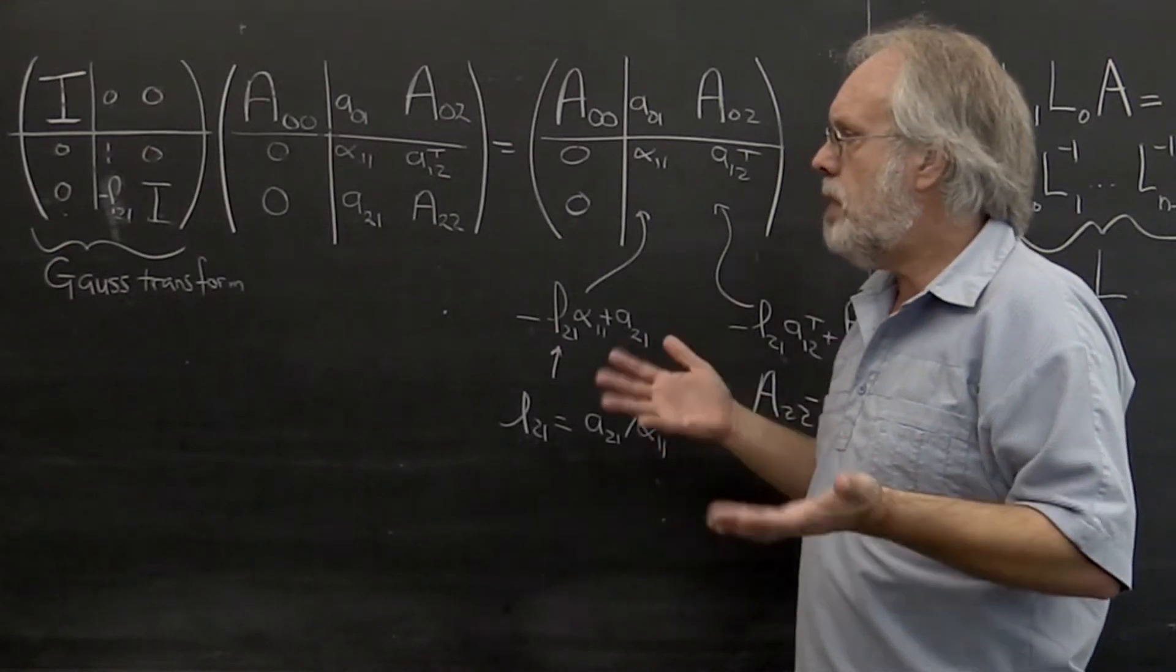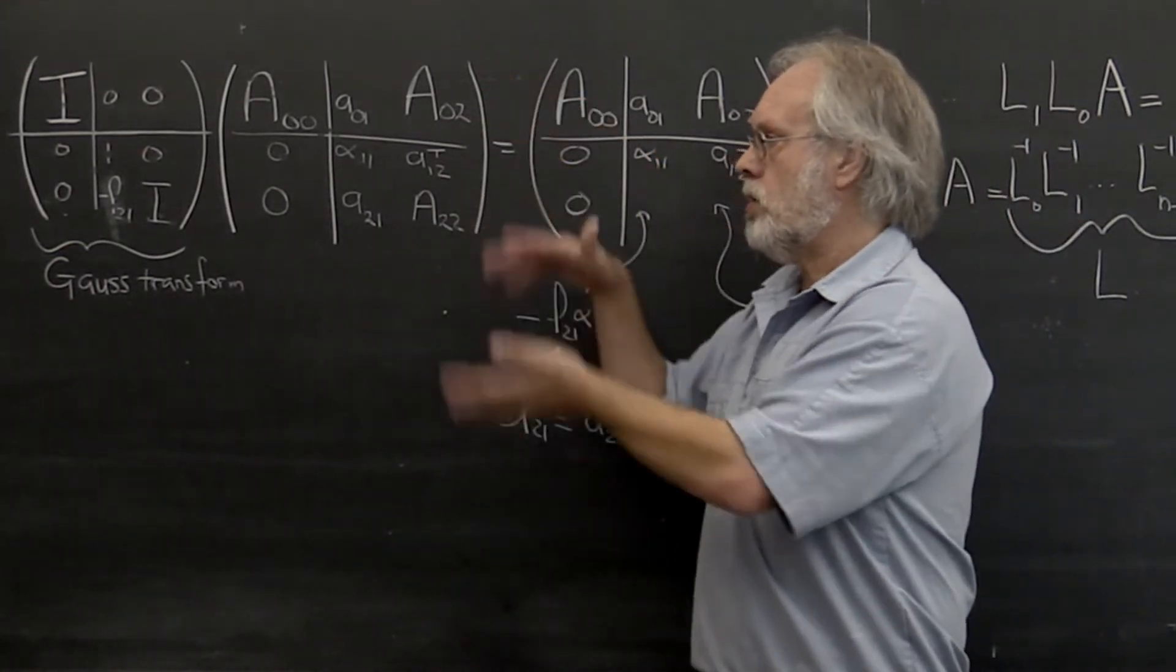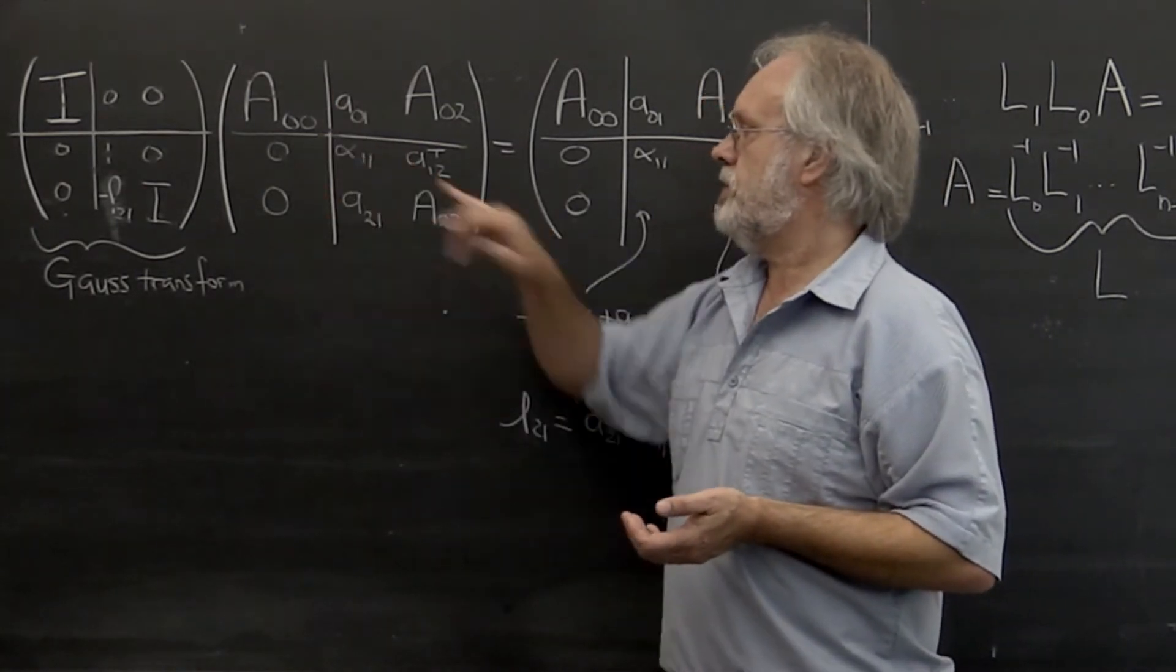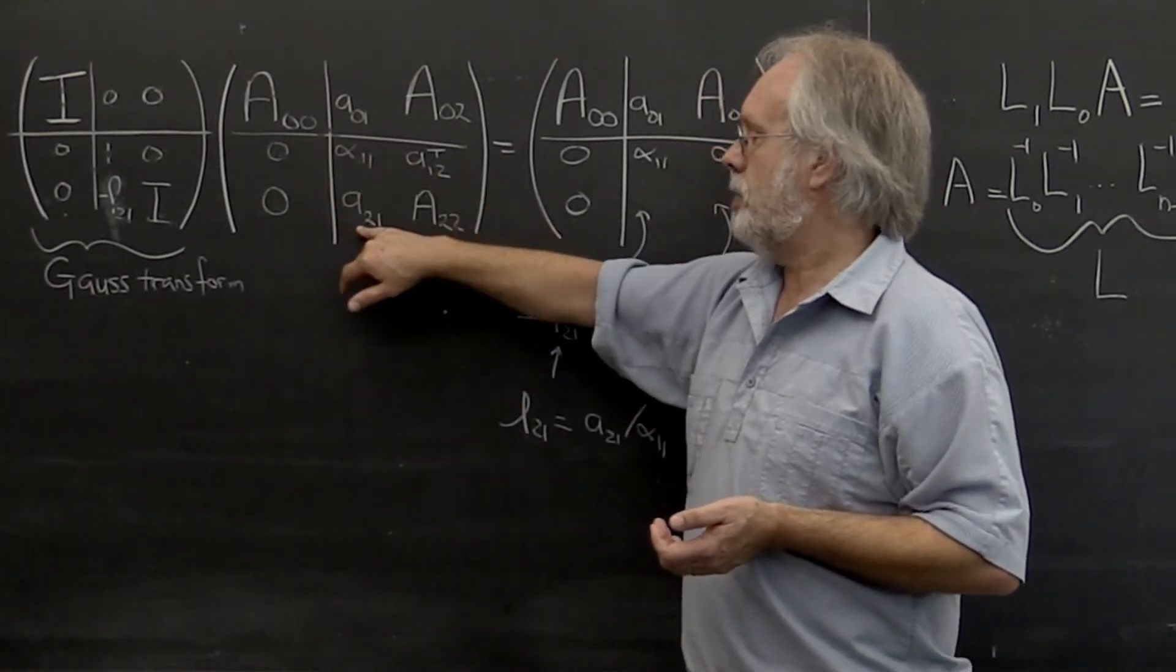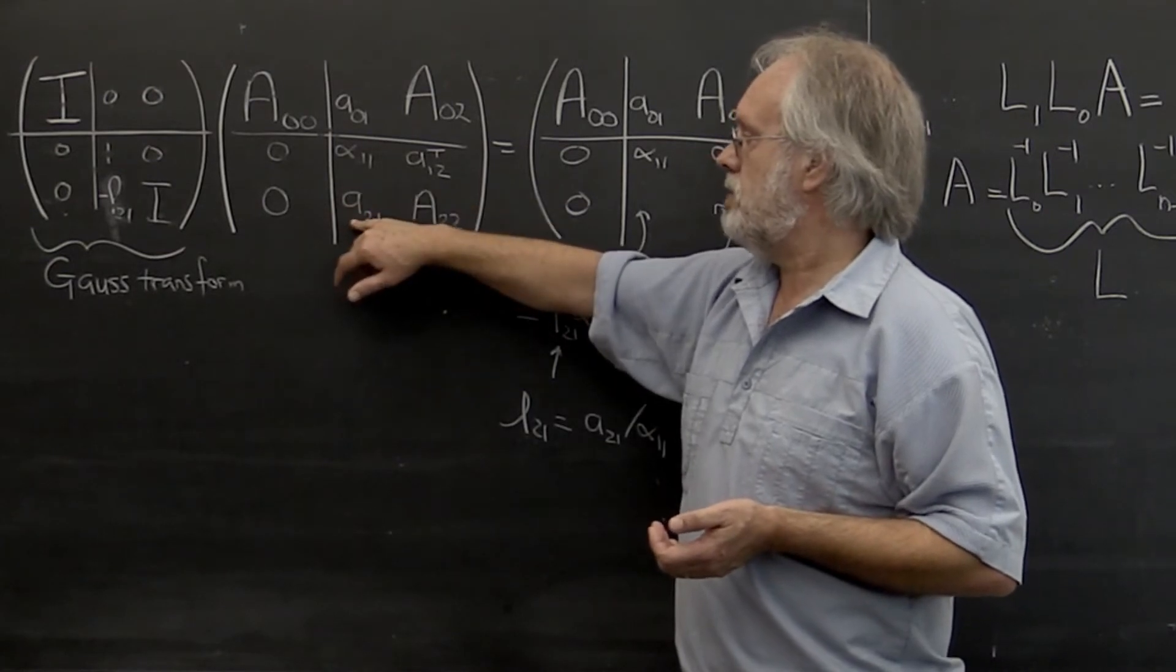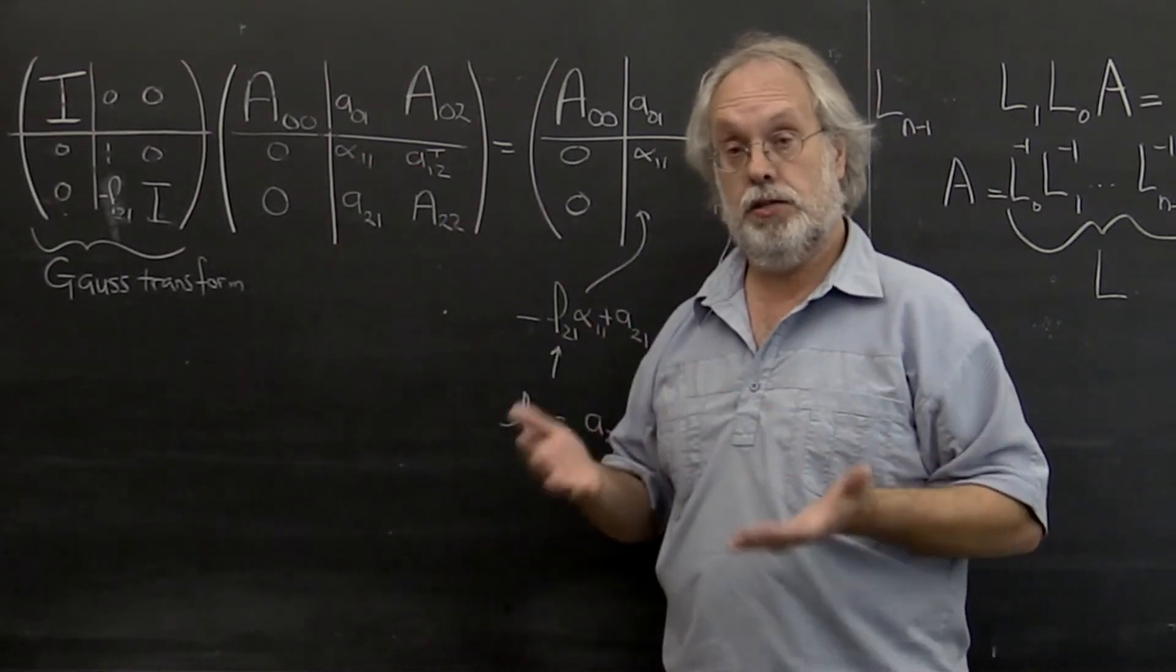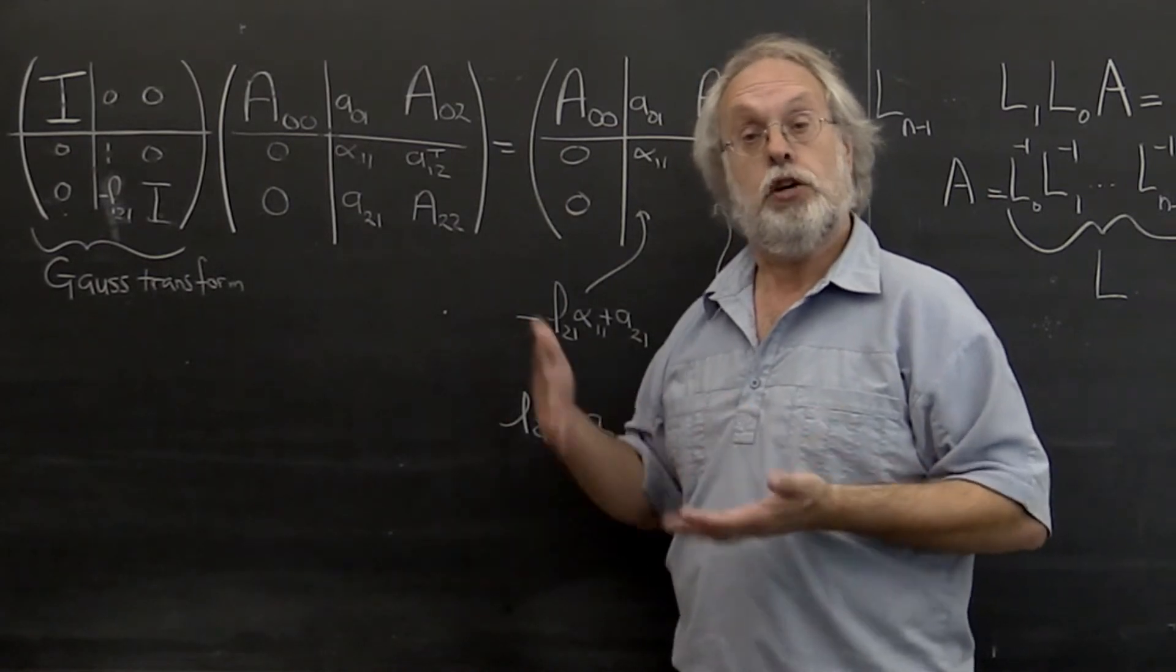So maybe it would have been possible to reorder the equations in such a way that when you get to this particular point, another element in a21 below it is actually on the diagonal. And if that element is non-zero, then you'd be okay again.